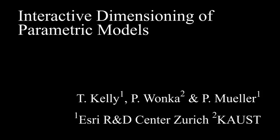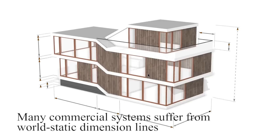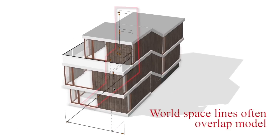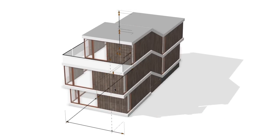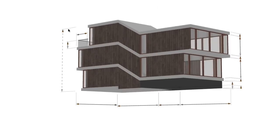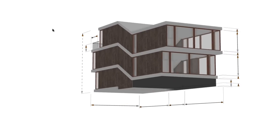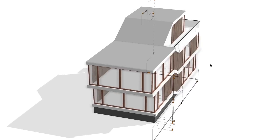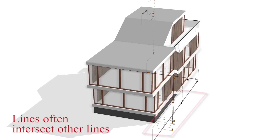Interactive dimensioning of parametric models. Many commercial systems suffer from world static dimension lines. As the viewpoint changes, we notice that many dimension lines are inside the model's silhouette. This makes them hard to view and hard to modify. Dimension lines crossing each other add to the confusion.